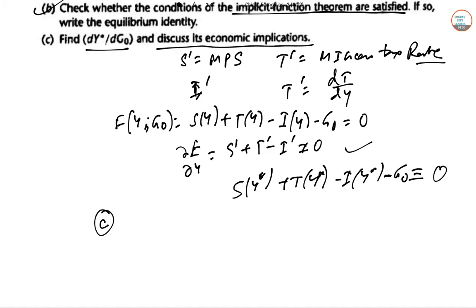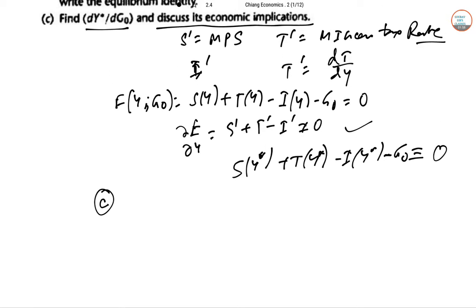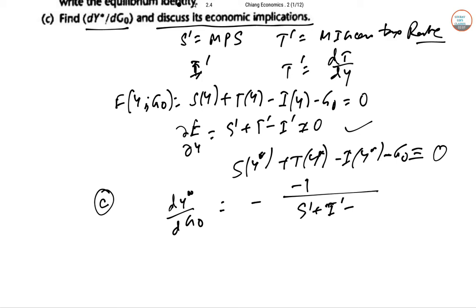Part C: find dY*/dG₀ and discuss the economic implications. By the implicit function rule, dY*/dG₀ = 1 / (S' + T' − I'), which is greater than zero. So increasing G₀ will increase the equilibrium national income.